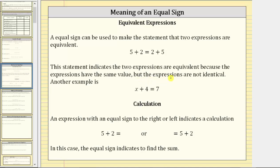The expressions have the same value but are not identical. Another example is x plus four equals seven. This indicates the expression x plus four is equivalent to seven for some value of x, which leads us to find the value of x that makes this statement true.